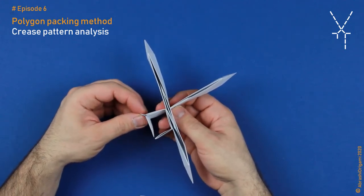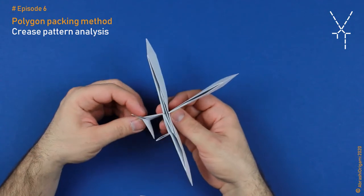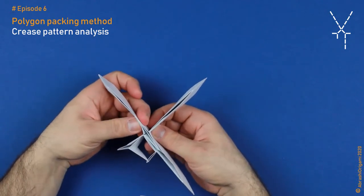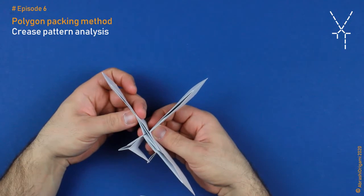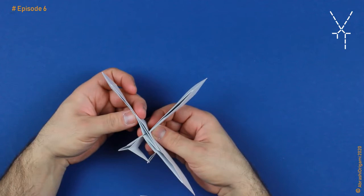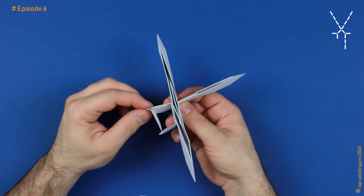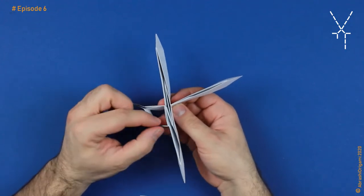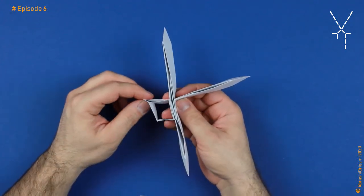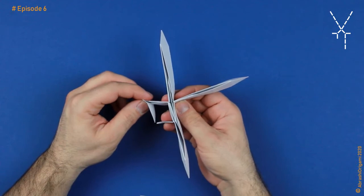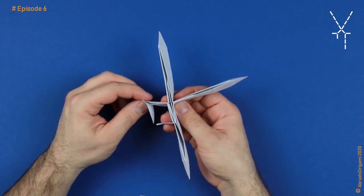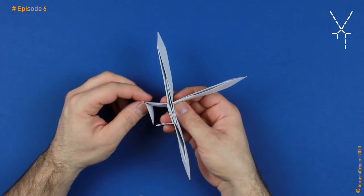We really don't need hinge creases to know where polygons are. I hope you remember this from the last episode when I told you that the easiest way to identify polygons is to analyze the positions of ridge creases. Ridge creases will without any doubt show you where polygons are. Hinge creases, even though they are supposed to define polygons, are not important. We shouldn't care about them. It sounds illogical, but it's true.